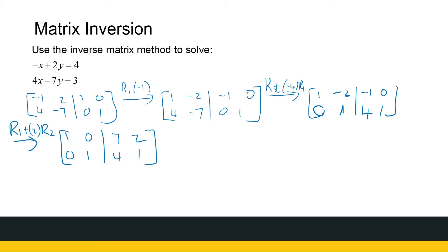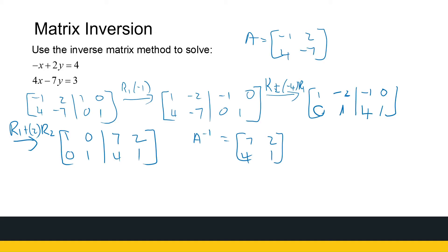We've now found A inverse, where A is the coefficient matrix minus one, two, four, minus seven. A inverse is whatever is on the right-hand side: seven, two, four, one. You can check that your inverse is correct by multiplying it with the original matrix and verifying you get the identity — but we trust our workings here.